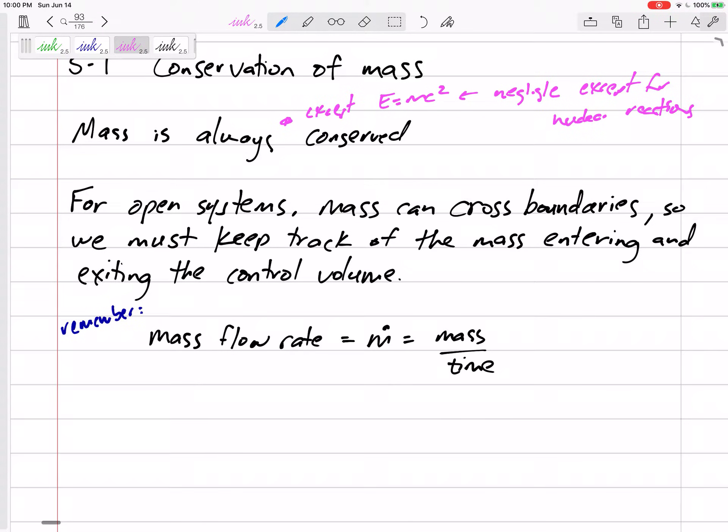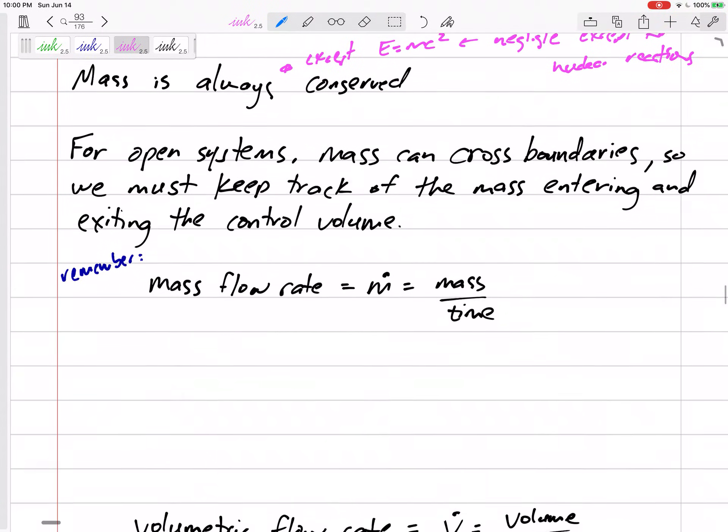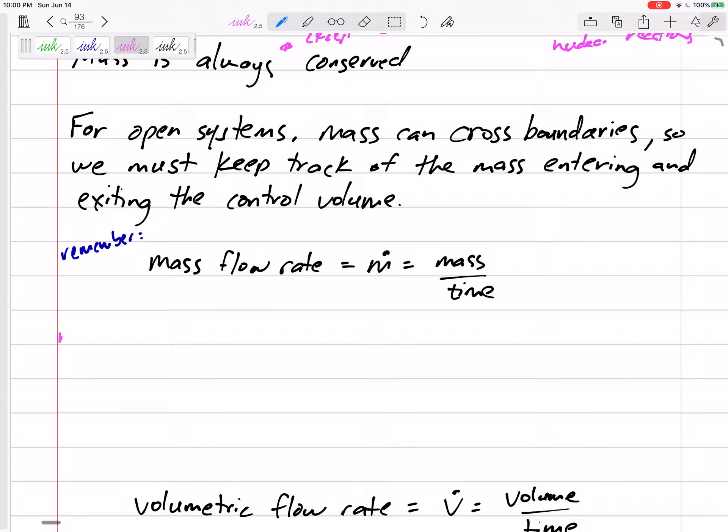So we might want to know how much mass is entering and exiting, how much mass is coming in the inlet. What's the mass flow rate of the inlet? What's the mass flow rate of the outlet? We've talked a little bit about mass flow rate. Mass flow rate is mass divided by time. If we have a circular inlet or outlet, then the mass flowing through here, maybe it's uniform. It probably isn't really uniform, but we could find the average velocity.